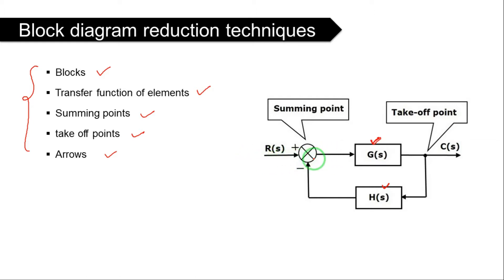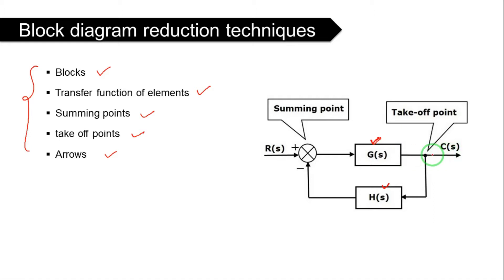Arrows indicate the direction of signal flow. R(s) is the input and the arrow points toward the summing point, where it is added and H(s) feedback element is subtracted. The resultant output is then connected to G(s). After passing through G(s), the output C(s) is shown with an arrow at the output. Now that we have identified all the block diagram elements, we will move to the rules.